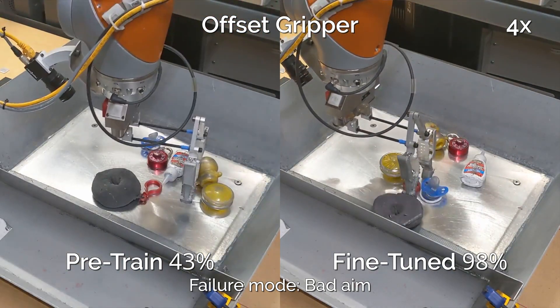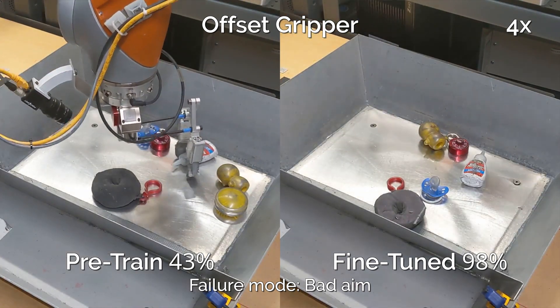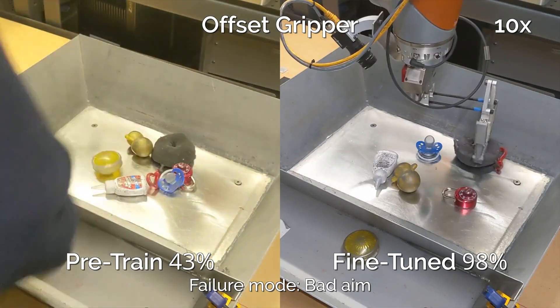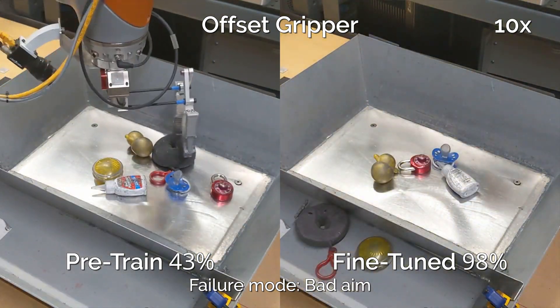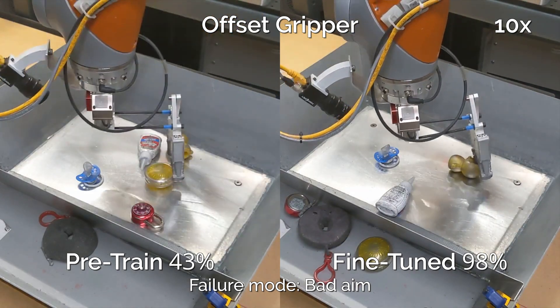Lastly, we change the robot's morphology by mounting the gripper fingers 10 centimeters to the right of their original positions. Predictably, the untuned policy often grasps to the right of its target object. With a 98% success rate, our fine-tuning method corrects for this problem completely.